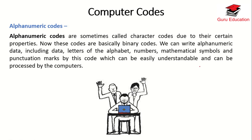Hi guys, my name is Dr. Dujinder. Today I am discussing alphanumeric codes. Alphanumeric are something called character codes due to their certain properties. These codes are basically binary codes. We can write alphanumeric data including letters of the alphabet, numbers, mathematical symbols, and punctuation marks by this code, which can be easily understood and processed by the computer.